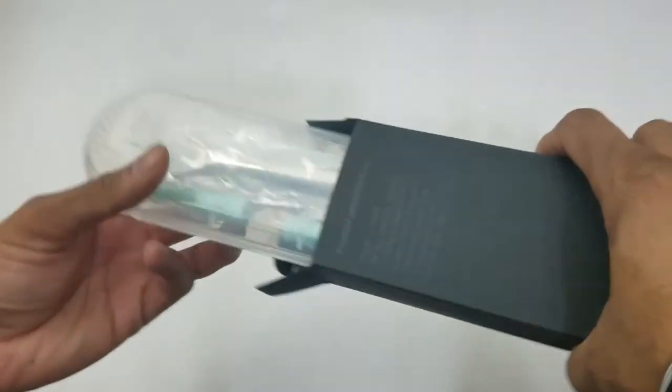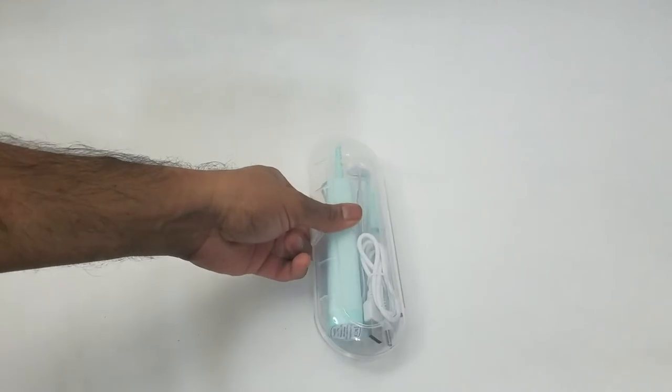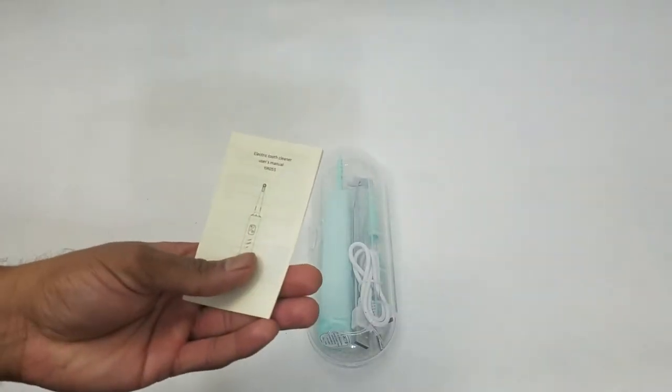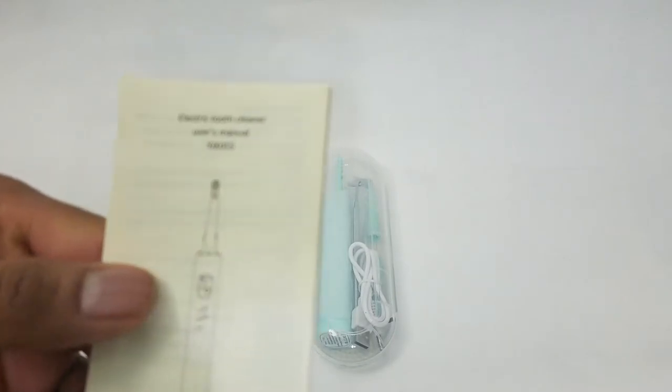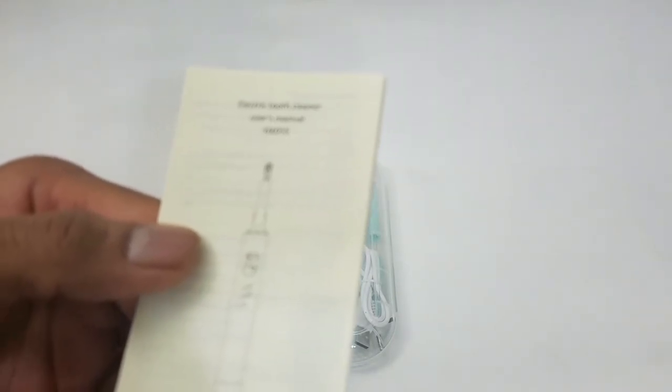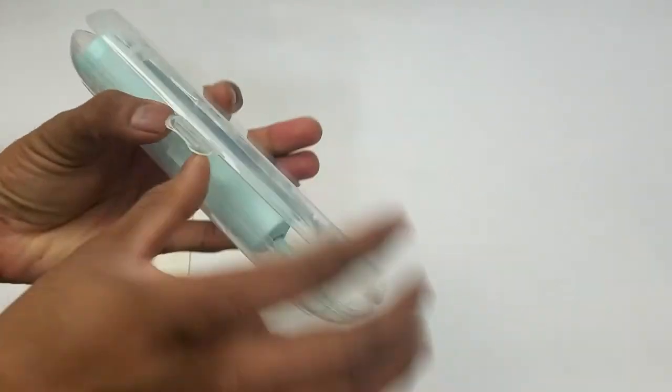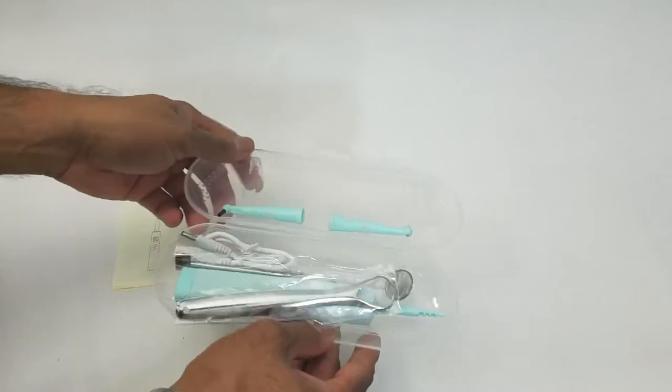This is the product and we also have the user manual. The model number is YJK-055. In addition to that, you have a travel kit where you can keep all your dental items. You have a solid steel tongue scraper.